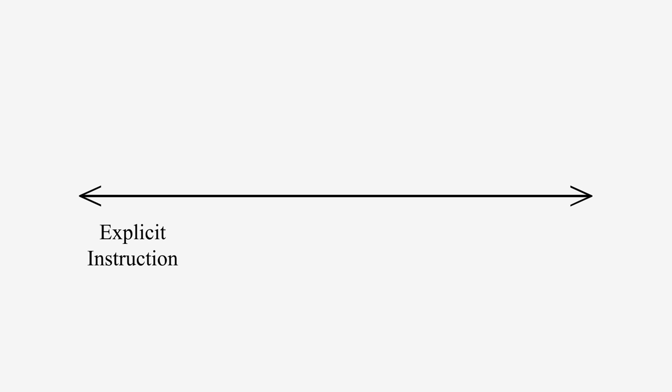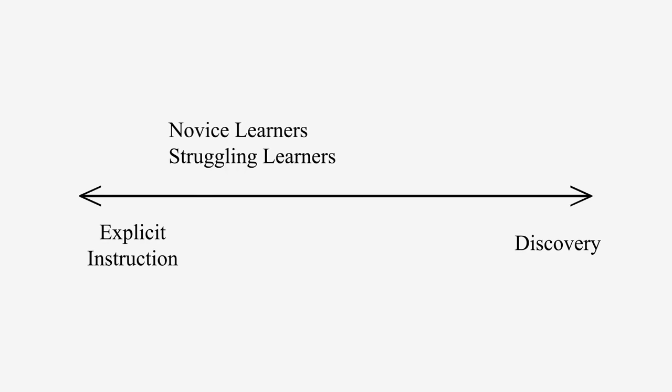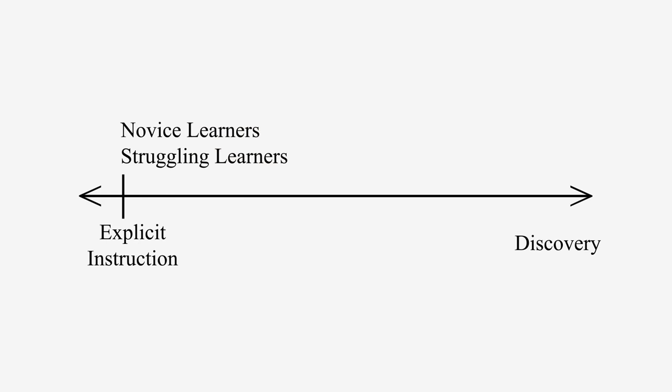When we look at the research on instruction, we learn what the attributes of that continuum are. For example, if you are teaching children who are novices — who have just never learned this body of knowledge in the past — it appears they do much better if we explicitly teach them the information, whether it's knowledge, skills, or strategies. If they are brand new to algebra or new to decoding of words, they really benefit from very explicit instruction.